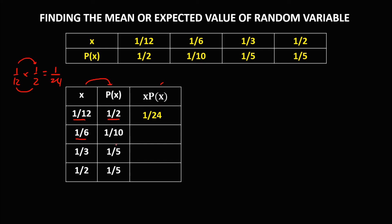Then 1/6 times 1/10: 6 times 10 is 60, so that's 1/60. And 1/3 times 1/5: 3 times 5 is 15, so this one is 1/15. And 1/2 times 1/5: 2 times 5 is 10, so this one is 1/10.